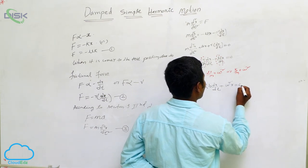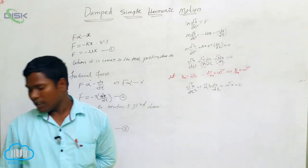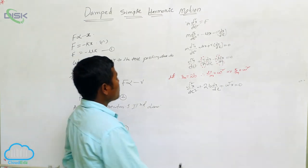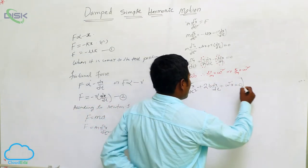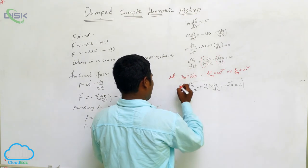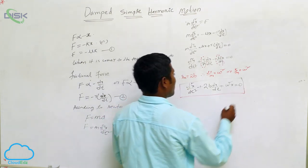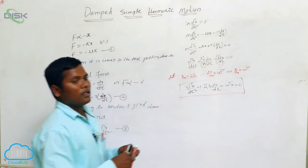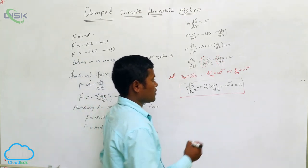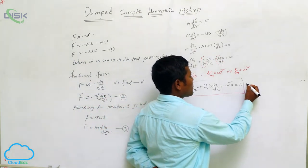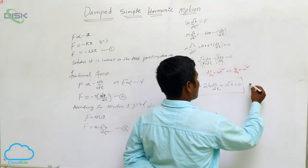Setting this equal to zero gives us the final result: d²x/dt² + 2b(dx/dt) + ω²x = 0. This equation is known as the damped simple harmonic motion equation.